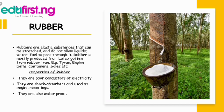Now let's talk about rubber. Rubbers are elastic substances that can be stretched and do not allow liquids to flow through them, meaning they are not porous. Rubber is gotten from latex which is produced by the rubber tree. You can see a picture here showing latex being collected in a small bowl.